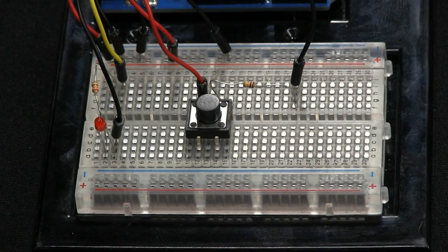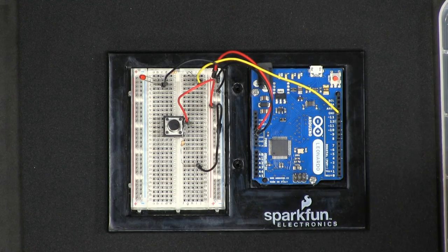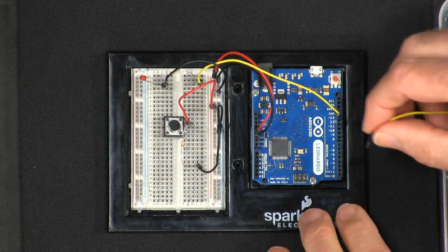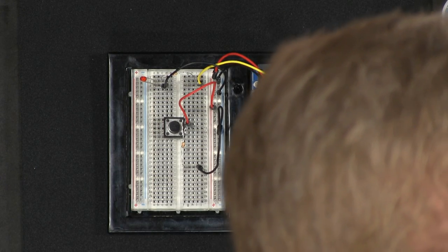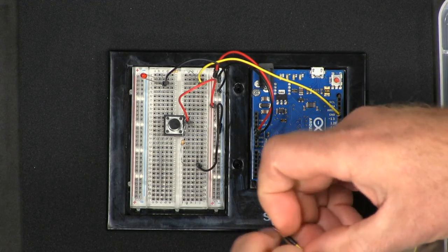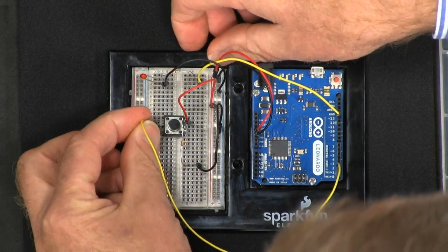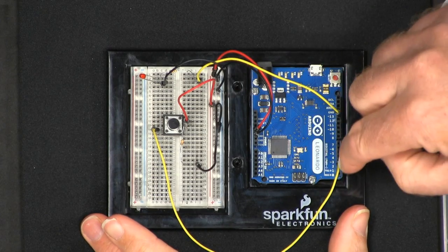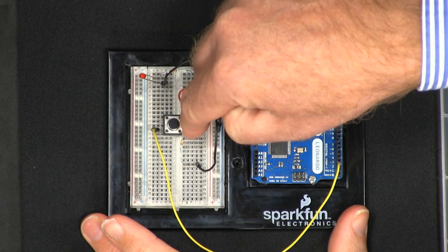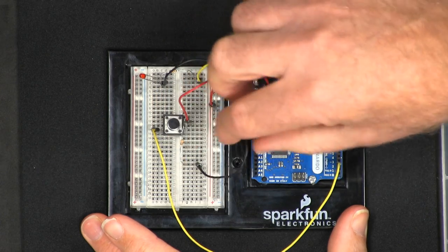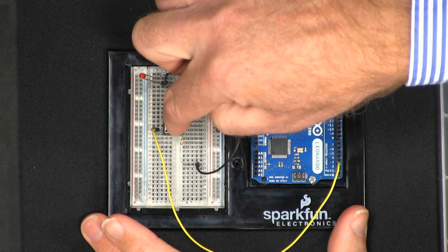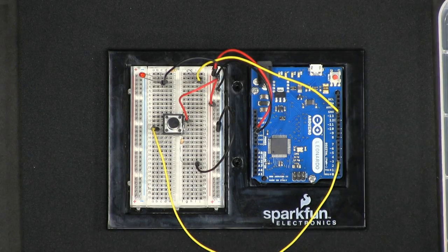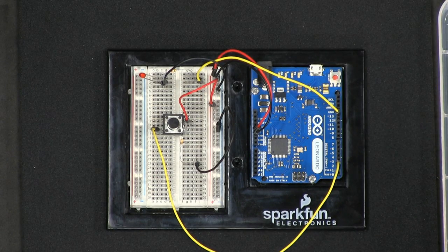So that just leaves one more connection which is going to be from pin 2 of the Leonardo, the Arduino Leonardo which we're using here, and that is going to go around to the other side of the switch. So normally without pressing the switch the pin 2 is connected to the pull down resistor to ground, but when we press the switch it'll be connected to the plus 5 volts. So it looks like the hardware is all done, but now we have to look at the software.